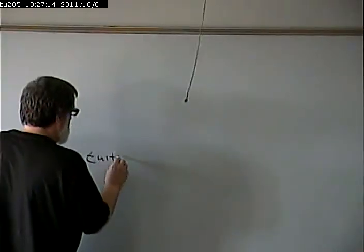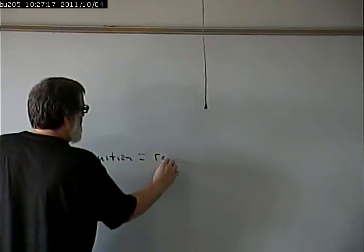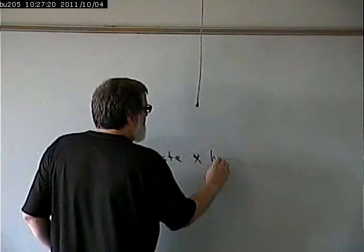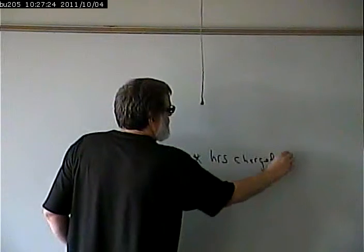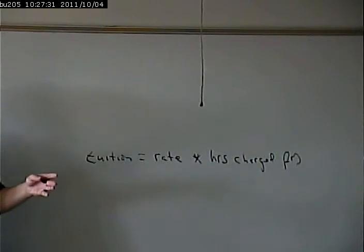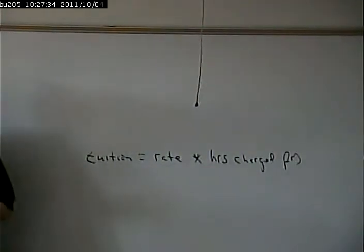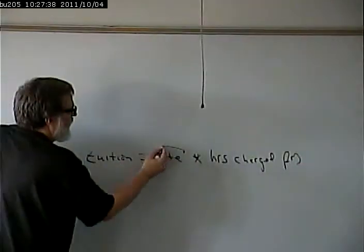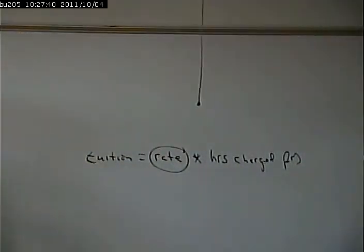So, let's look at what we know. What's the basic calculation of credit hours, or of tuition? It is tuition equals rate times the hours that you're being charged for. So, we have two variables there. How do we come up with those two variables? Well, the rate is a function of the type of student they are. In county, out of county, or out of state.